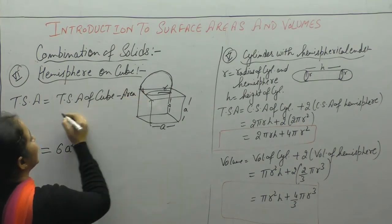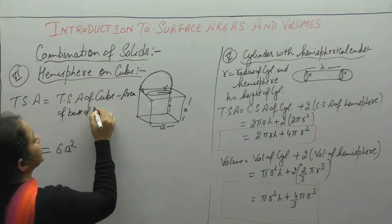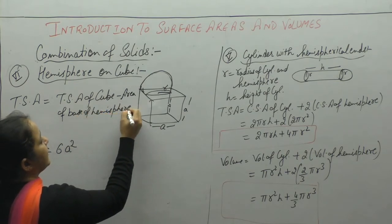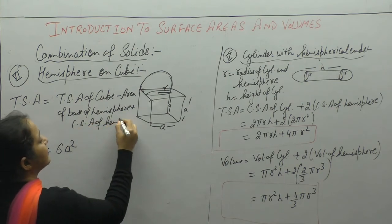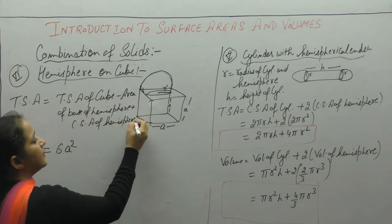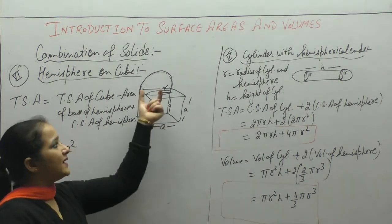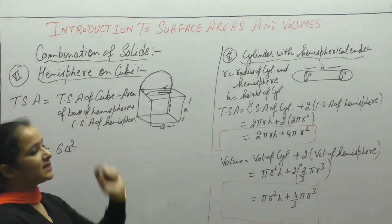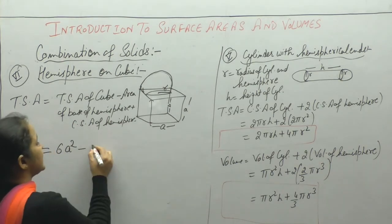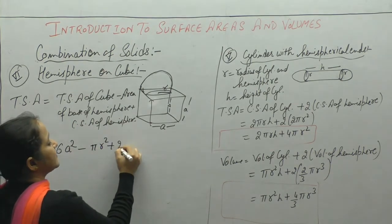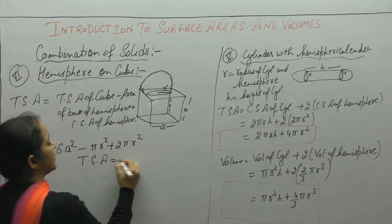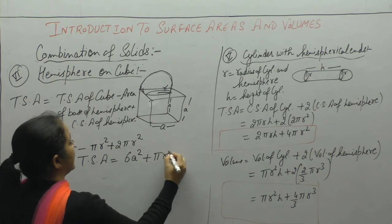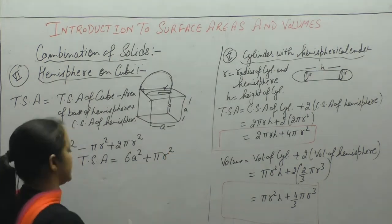Total surface area = total surface area of cube − area of base of hemisphere + curved surface area of hemisphere. The base of the hemisphere is circular, so its area is πr², and since it is subtracted to avoid double counting, and curved surface area of hemisphere is 2πr², the total surface area = 6a² − πr² + 2πr² = 6a² + πr².